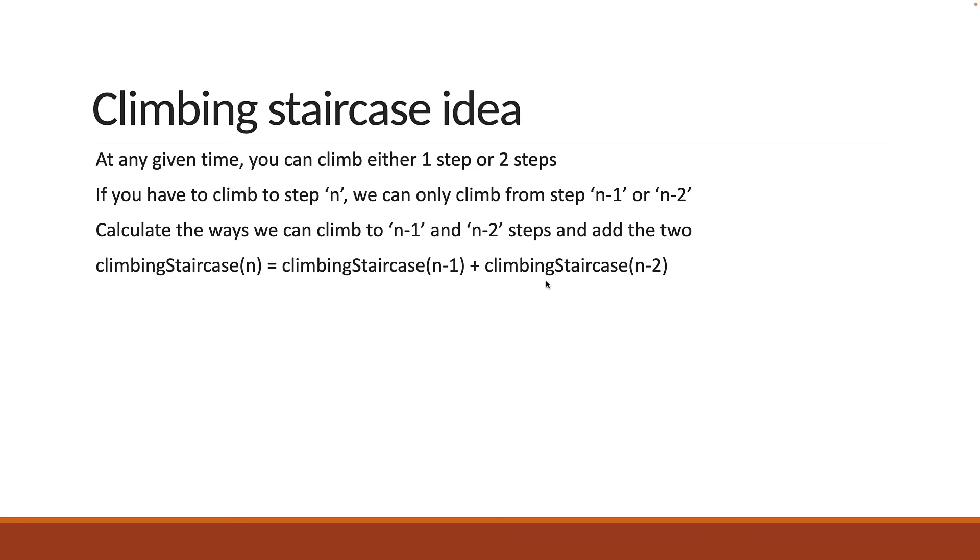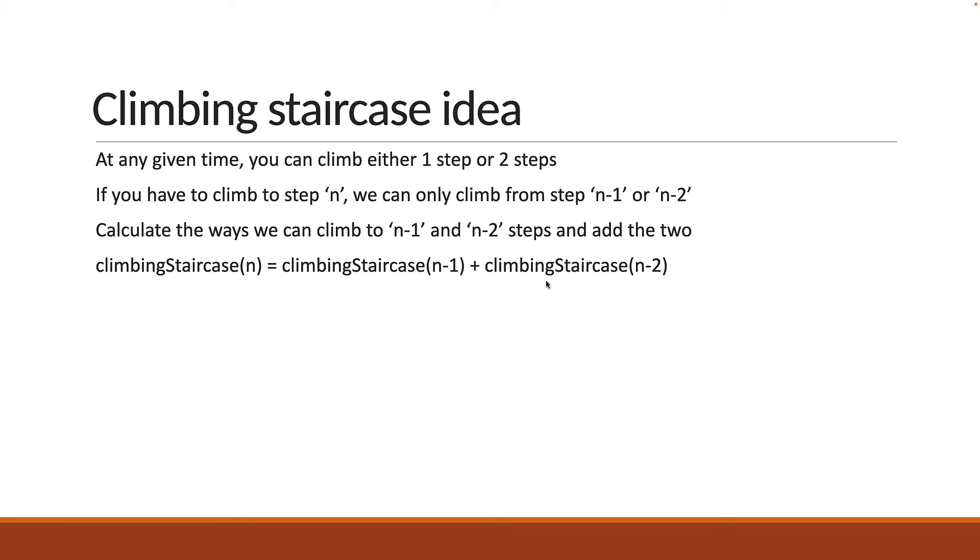Let's verify the formula using the previous slide. We know that climbing the first and second steps are fixed at one and two ways respectively. Third step would now be sum of 1 and 2 which is 3. The number of ways to climb fourth step would be sum of 2 and 3 which is 5. So the number of ways to climb n is equal to the number of ways to climb n-1 plus the number of ways to climb n-2.